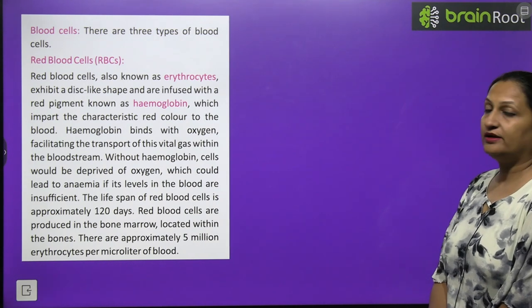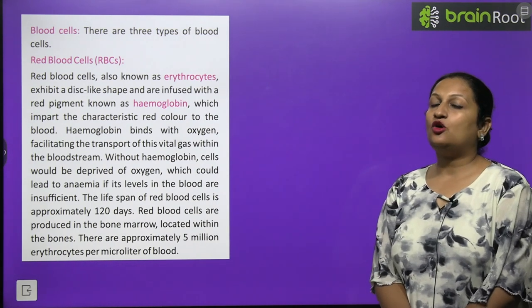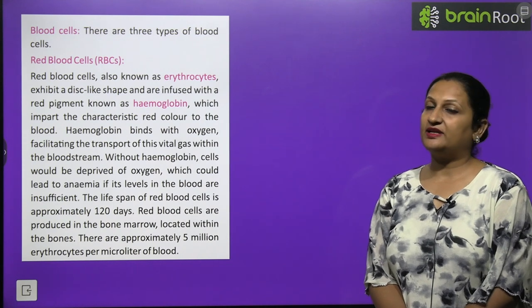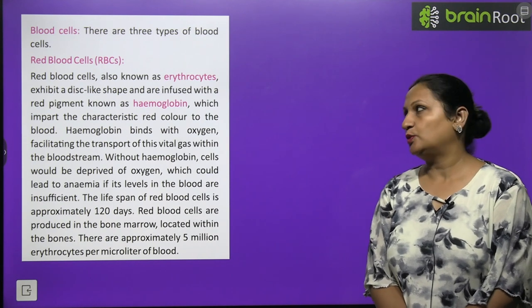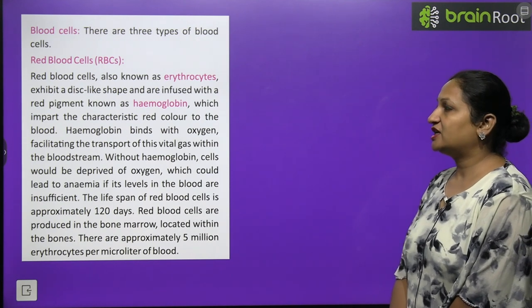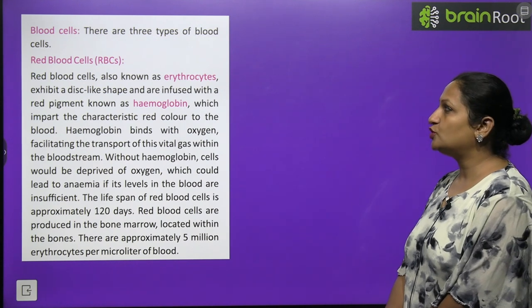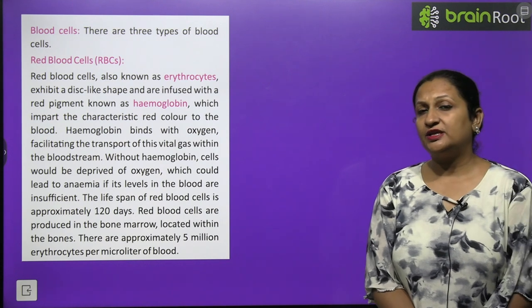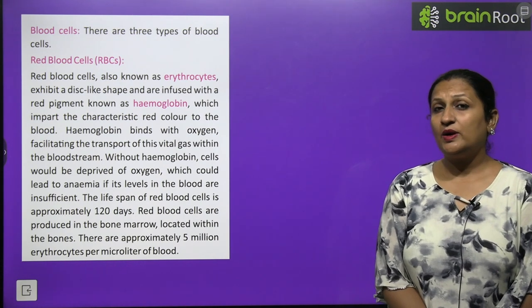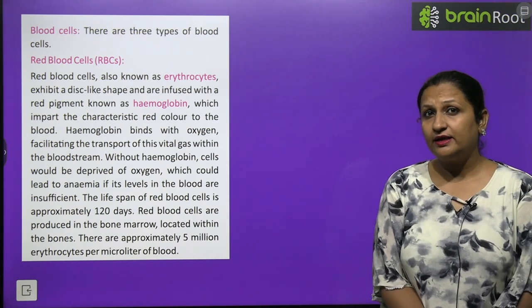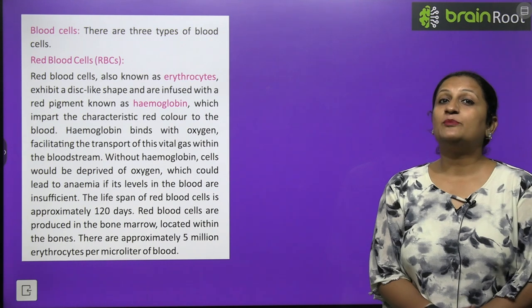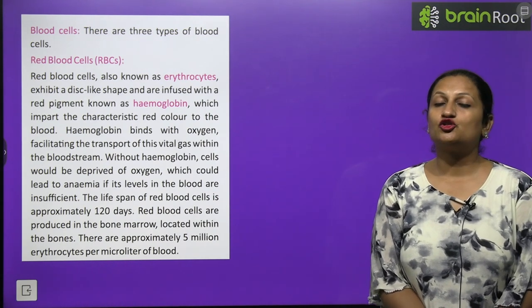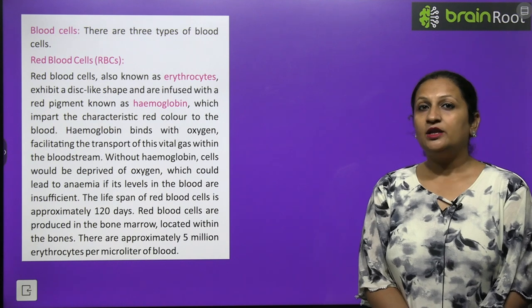The first type of blood cell is RBC — red blood cells, also called erythrocytes. They are disc-like in shape and are infused with a red pigment called hemoglobin, which is why they are red in colour. Hemoglobin is composed of two components: heme, meaning iron, and globin, meaning protein.